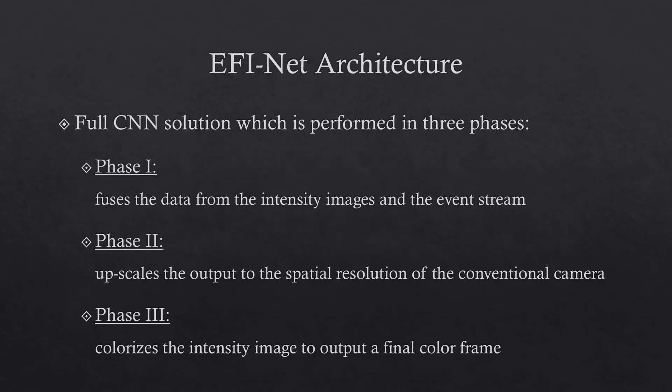We have seen great success of convolutional neural networks in solving event reconstruction problems. Inspired by them, our algorithm is a full CNN solution performed in three phases. Phase 1 fuses the data from the intensity images and the event stream into an intensity estimation of the interpolated frame at the spatial resolution of the event camera. Phase 2 upscales the output of Phase 1 to the spatial resolution of the conventional camera. Finally, Phase 3 colorizes the intensity image to output the final color frame.